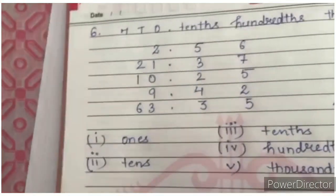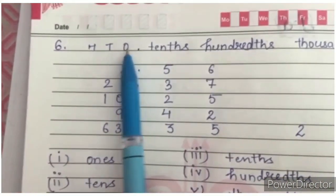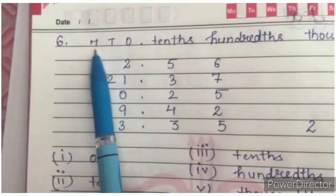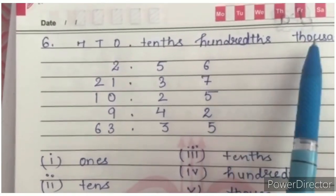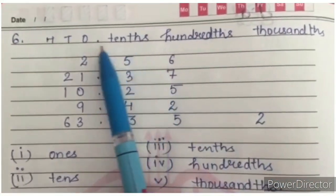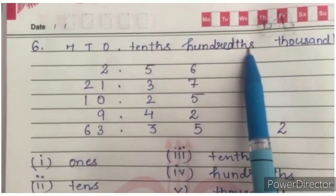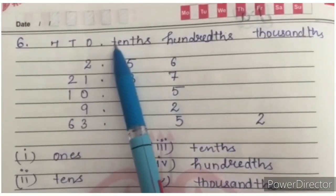How you will do this question? You will make a place value chart. Ones, tens, hundredth, then tens, hundredth, and thousandth. You know after decimal, THS comes. And ones will be removed.